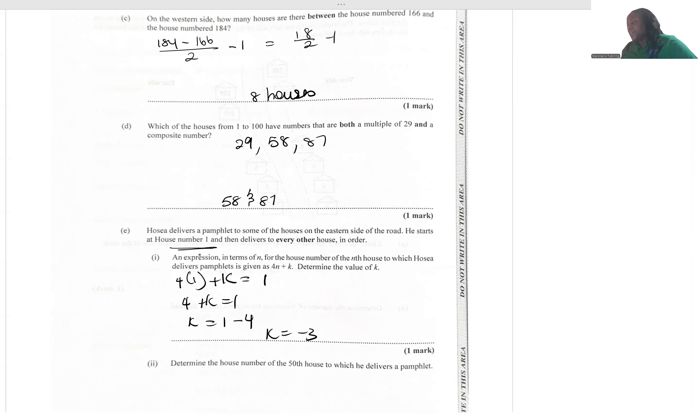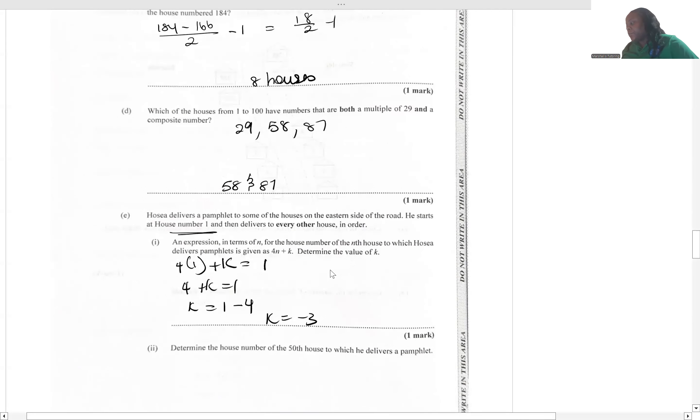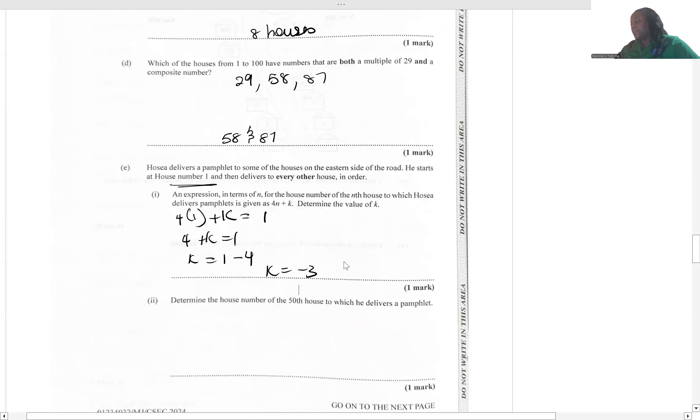Now they want us to determine the number of the 50th house to which he delivers a pamphlet. We've determined the value of k, so now it's just a matter of us filling that into the formula to find out what is the house number of the 50th house.